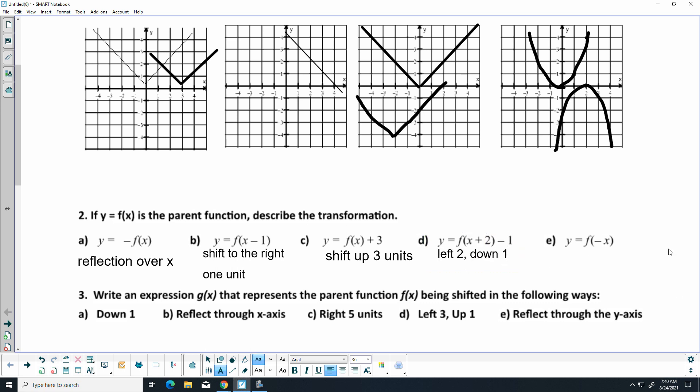And on E, we're making the X negative, so that is going to be a reflection over the Y axis. Remember, to reflect over the X, we make our Y's negative. To reflect over the Y's, we make the X's negative.